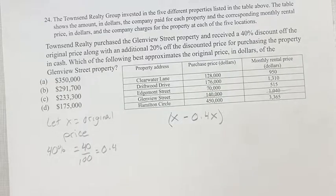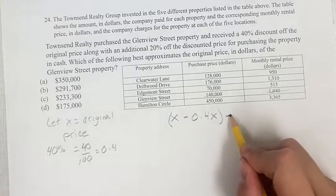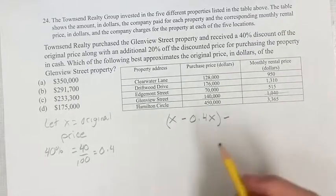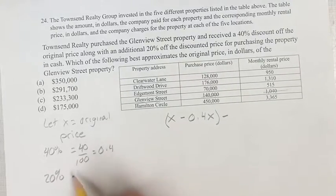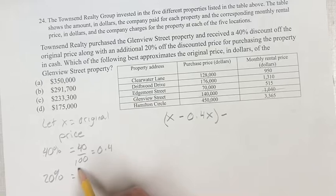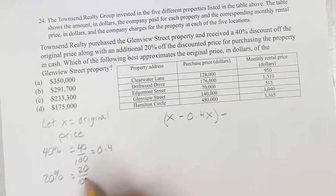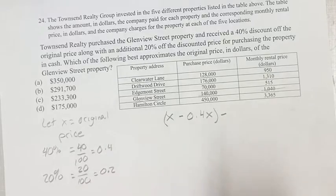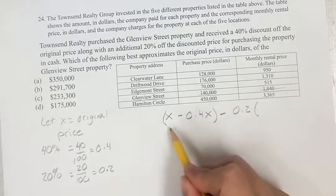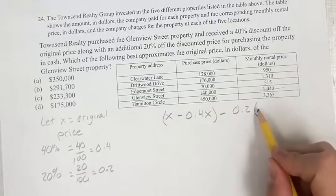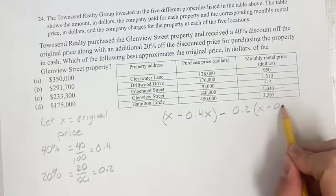So we know that we have this value minus 20%, and we can think of 20% the same way as 20 over 100 — out of 100 — which is 0.2. So this is 0.2 times the discounted price, x minus 0.4x.